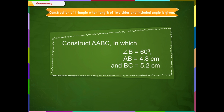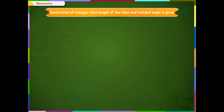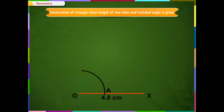Before doing construction, draw a rough sketch so that you will get an idea which side is to be taken as a base. Step 1: From the rough figure, it is clear that we have to draw the base first, that is, OX is equal to 4.8 cm. Step 2: With O as center and of any radius, draw an arc cutting OX at A. With A as center and with same radius, draw another arc cutting the previous arc at B. Step 3: Join OB and produce it to get a ray OY. Angle YOX is equal to 60 degrees.